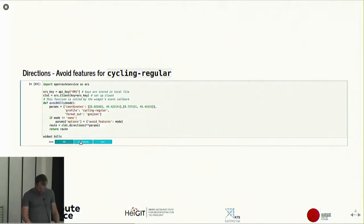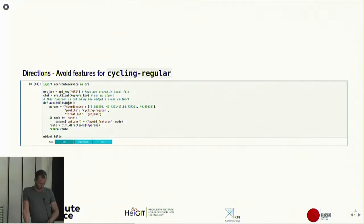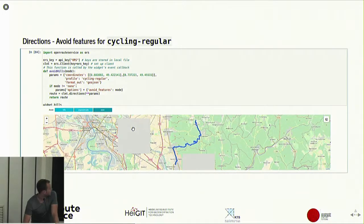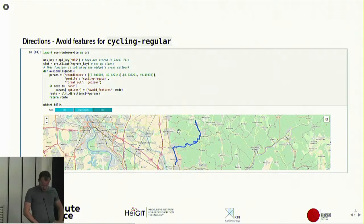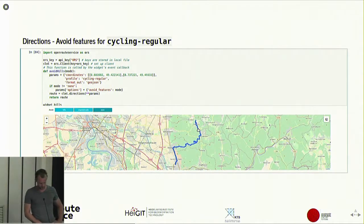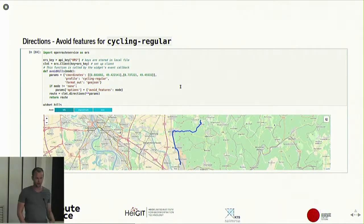In this example we want to avoid features for a cycling profile. We're going from Heidelberg city centre somewhere up the hill. With no restrictions set, it routes over the hills — the shortest route goes right over steep paths, not a road. If you want to avoid hills you can just tell it that, and then the route goes over the street instead, which is a lot less steep for the most part.